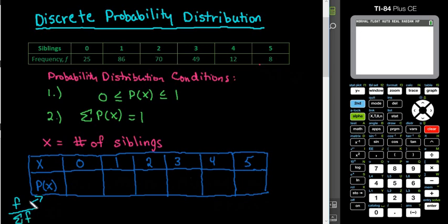So if you were not using a calculator to help you find this, what you would do is you would take and add this column up. So I would do the 25 plus 86 plus 70 plus 49, etc., add the entire row, and then we would divide each of the individual frequencies by the sum of all of the frequencies. Because this can be very time consuming, especially if you have a large data set, I'm going to show you how to use the TI-84 to speed things up.